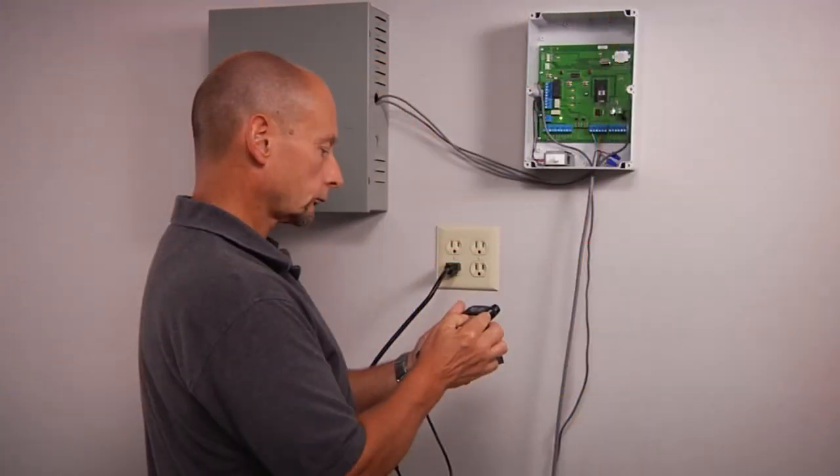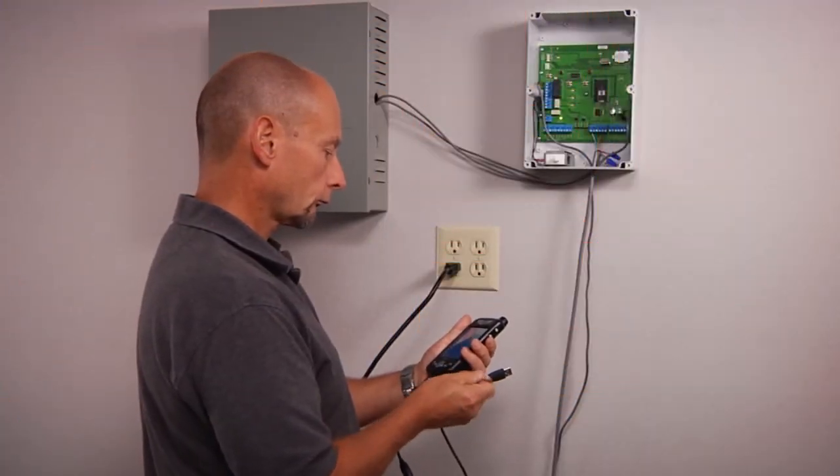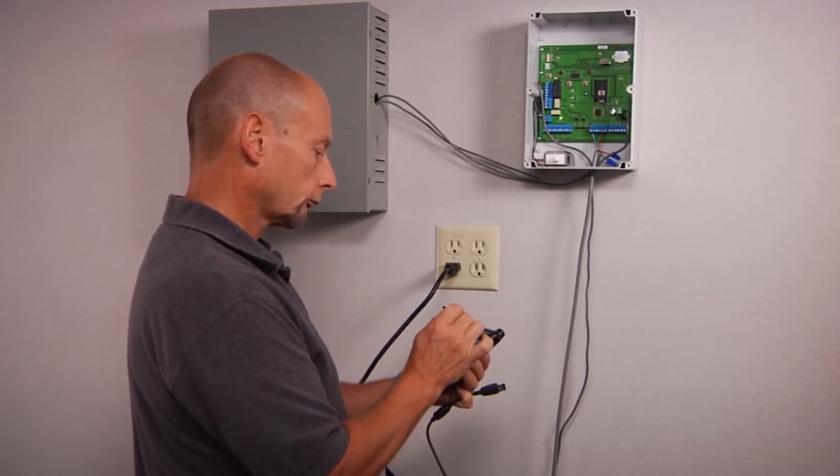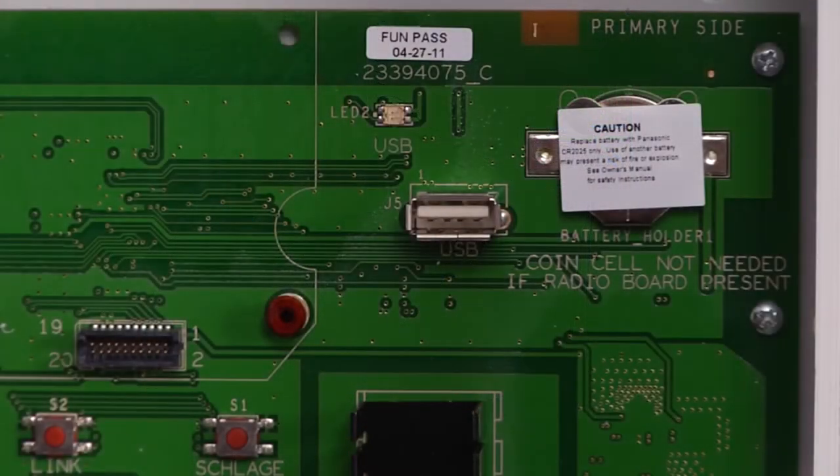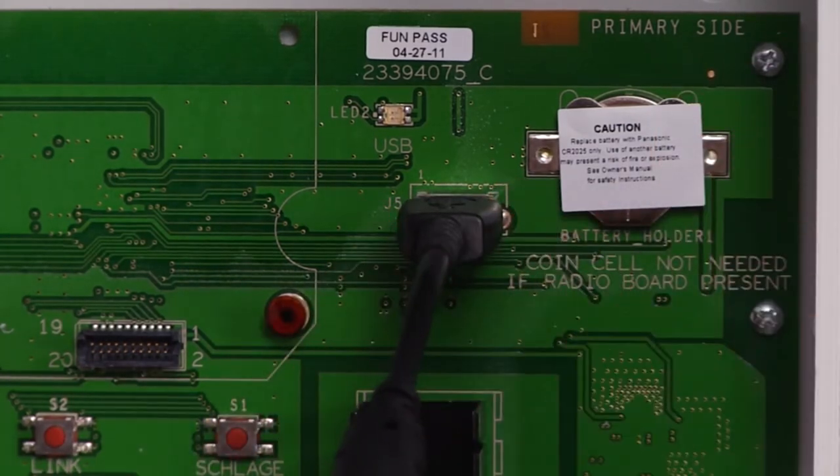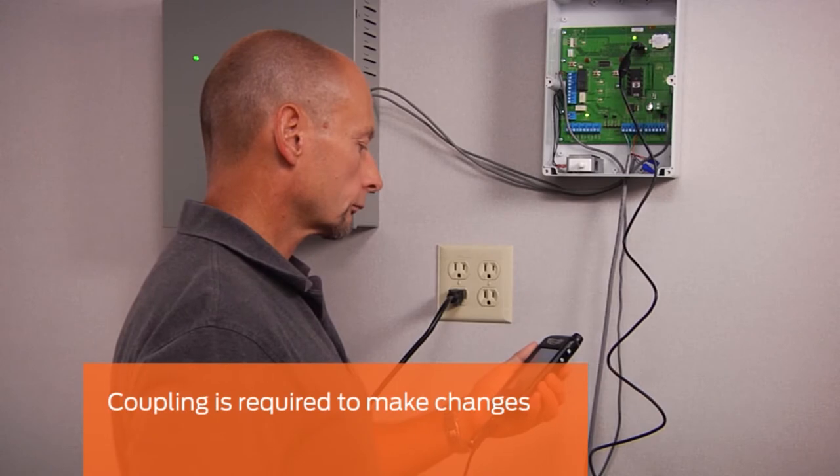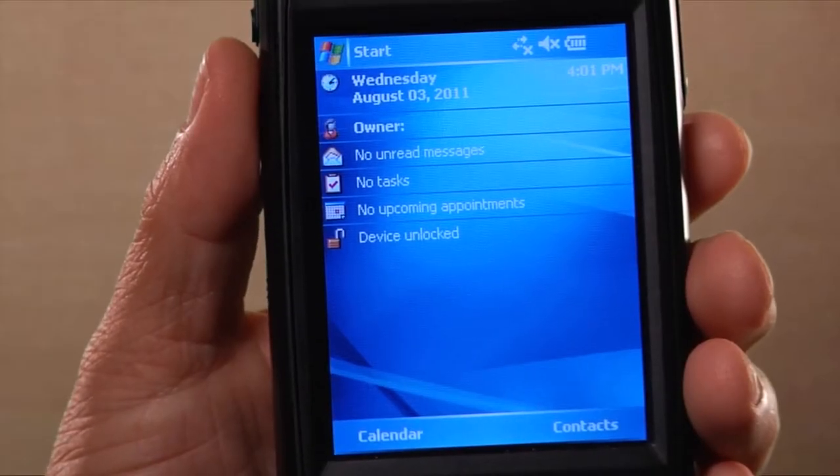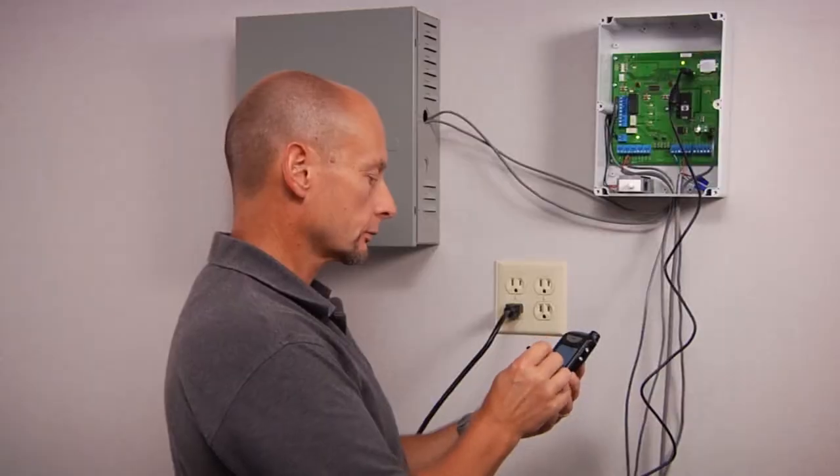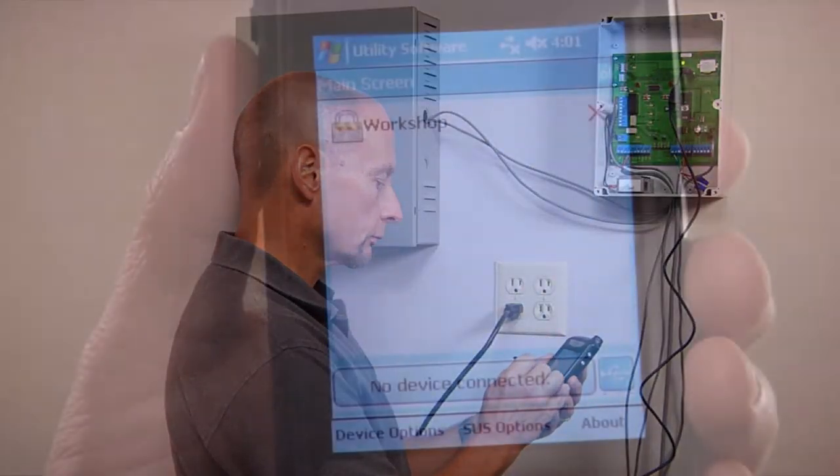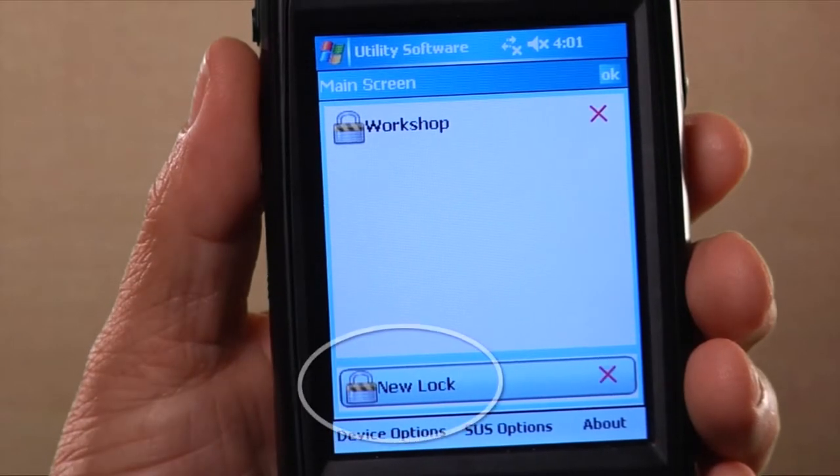To complete the installation, review the CT5000 settings with the HHD and ensure settings are appropriate for your application. Connect the HHD to the CT5000 with the USB cable. In order to make any changes to the CT5000 configuration, you must couple the HHD. Start the utility software and log in as manager. The CT5000 will automatically appear in the device list as new lock.